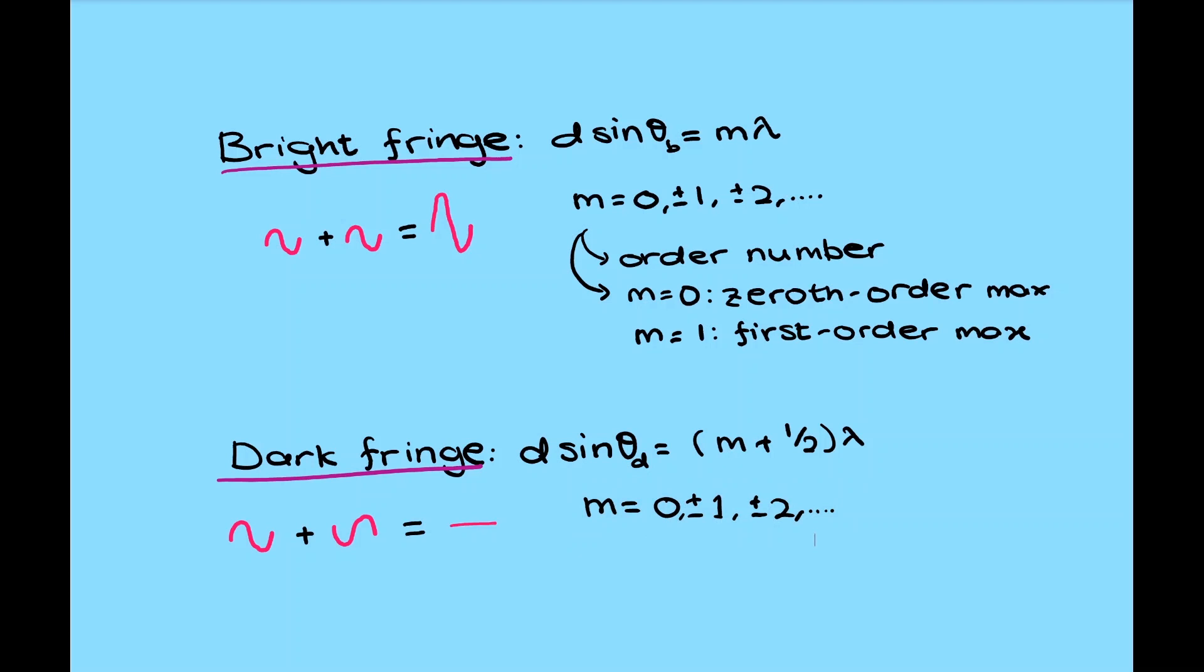For dark fringe, there is no zeroth order, and m equal to 0 is considered as the first order minimum.